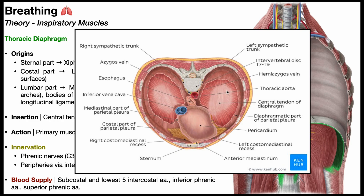In the center of each hemidiaphragm there's white aponeurotic tissue, which is a component of the central tendon of the diaphragm. There is also serous tissue attached to the muscular part — this is the diaphragmatic part of the parietal pleura. This is how the diaphragm attaches to the lungs: when it contracts, it pulls the parietal pleura, allowing the lungs to expand so you can inhale.